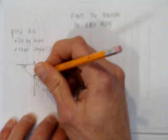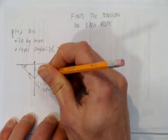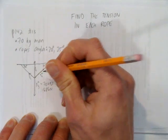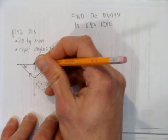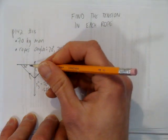The ropes are each going to have tension. There'll be a tension going this way. We'll call that tension 1. And there'll be a tension going this way. We'll call that tension 2. And those two tensions have to add to the equilibrium or equilibrant force.